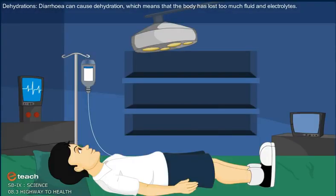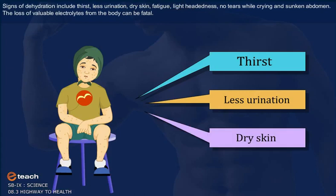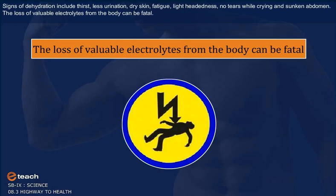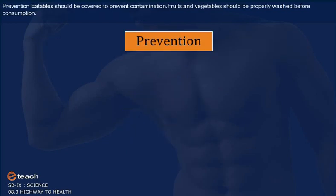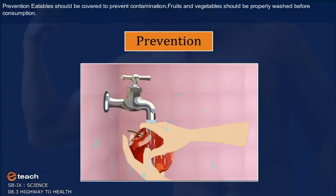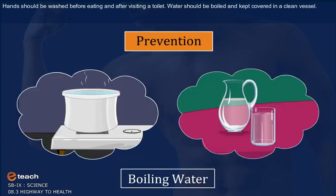Dehydration: Diarrhea can cause dehydration, which means the body has lost too much fluid and electrolytes. Signs of dehydration include thirst, less urination, dry skin, fatigue, lightheadedness, no tears while crying, and sunken abdomen. The loss of valuable electrolytes from the body can be fatal. Prevention: Eatables should be covered to prevent contamination. Fruits and vegetables should be properly washed before consumption. Hands should be washed before eating and after visiting a toilet. Water should be boiled and kept covered in a clean vessel.